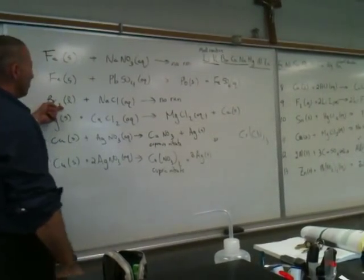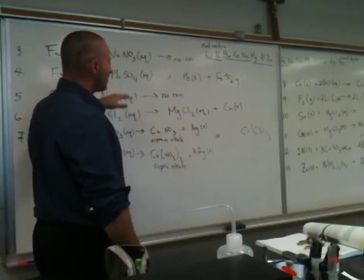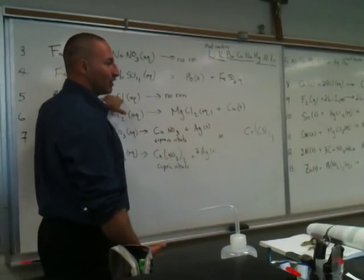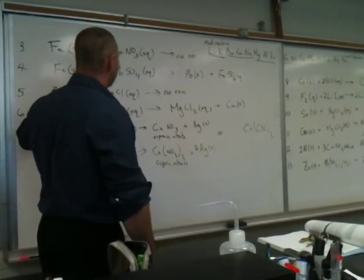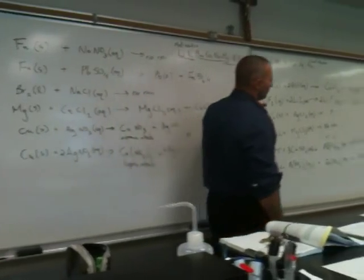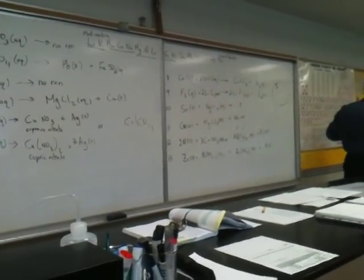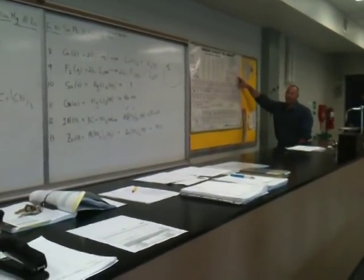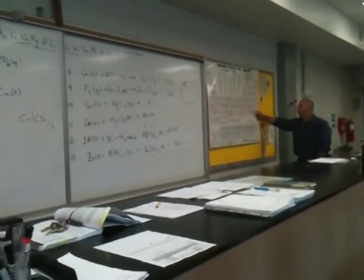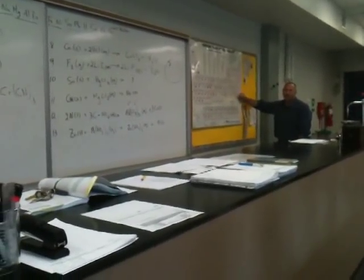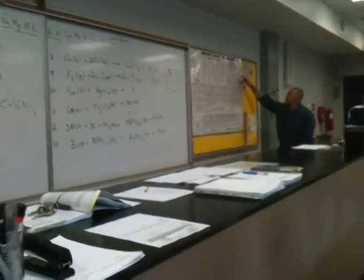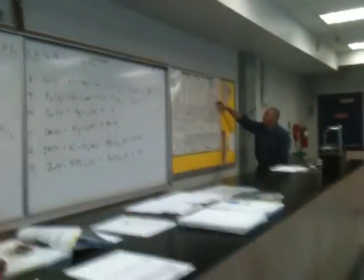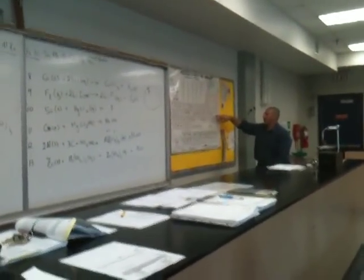In the next equation, we show liquid bromine reacting with sodium chloride. In this case, we're going to look at the anion. Halide reactivity increases as you go towards the top of the periodic table. The most reactive halogen is fluorine, the least reactive would be iodine. Astatine is not an issue because it's so radioactive it's not available in nature. So the reactivity series for halogens is: fluorine > chlorine > bromine > iodine.